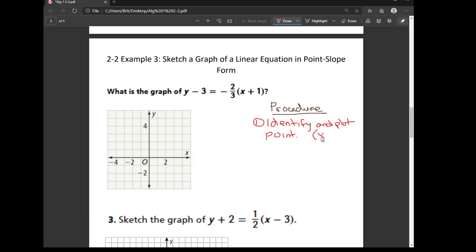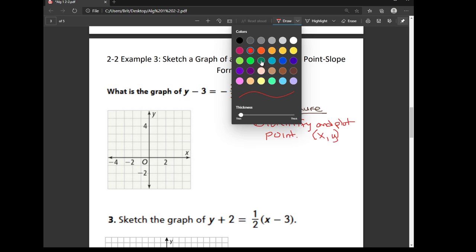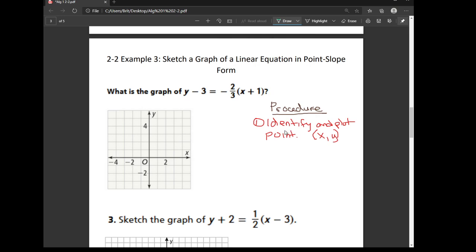It's going to be some kind of ordered pair, x, y, and then you are going to plot it on the coordinate plane. Once you have identified and plotted the point, you're going to use the slope to find a second point.